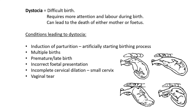Dystocia basically means a difficult birth — when anything goes wrong during the birthing process. It requires more attention and labor during birth, meaning someone must monitor the cow closely. Dystocia can potentially lead to the death of either the mother or the fetus. For the farmer this is an economic loss: losing a top cow or a calf means wasting roughly nine to ten months of the cow's pregnancy with no return.